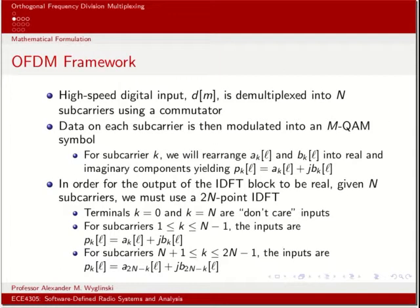So what is OFDM? OFDM is a form of multi-carrier transmission and reception, formulated slightly differently. We have the same high-speed digital input D_M, and it is demultiplexed into N subcarriers using a commutator. Each individual subcarrier is modulated using either amplitude or phase modulation, like M-ary QAM.